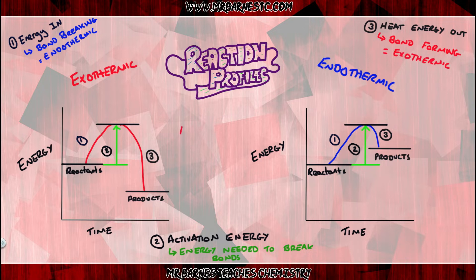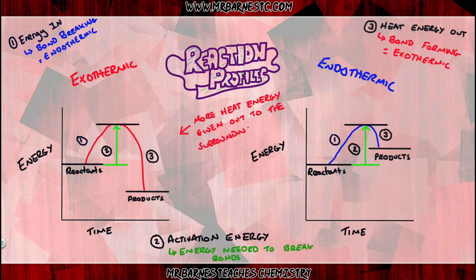In an exothermic reaction, the products have less energy than the reactants. This is because more heat energy has been given out to the surroundings when the bonds are formed than taken in when the bonds are broken.